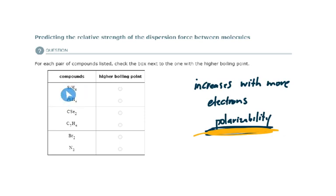So if I have these two compounds, the question is, which one has the higher boiling point? Well, the one that's going to have the higher boiling point or require more energy to break its attractive forces is going to be the one with the higher polarizability or the greatest number of electrons. So this is fairly easy to do.